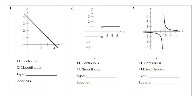For number one, even though we have a point highlighted, we are still continuous, so that one was pretty easy. Number two, we do have a discontinuity — this is a jump, and it is located at x equals 2. Number three, this type of discontinuity is an infinite discontinuity, and the location is at x equals 5.